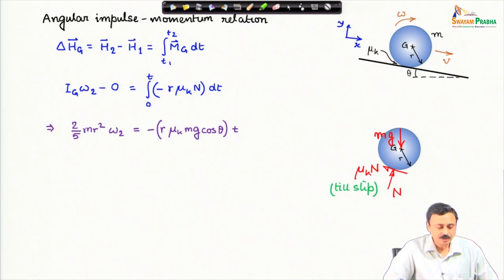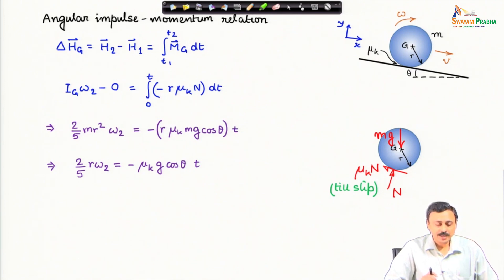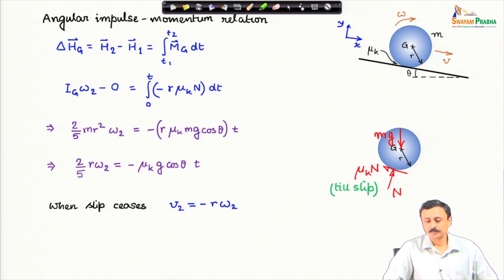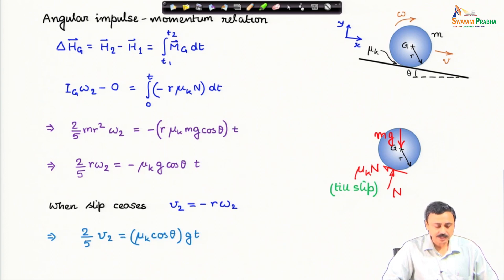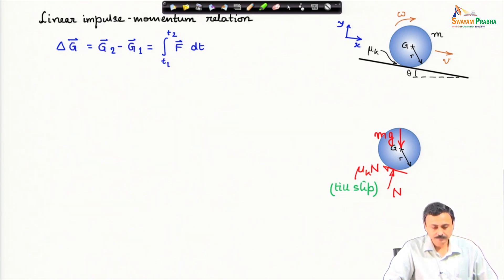The moment of inertia about G is 2/5 m r-squared times omega_2, and the right hand side is straightforward to integrate because everything is constant. By simplifying this expression I arrive at a relation from the angular impulse momentum relation. At the end of slipping the sphere starts rolling. The rolling condition is that the velocity of the center of mass must equal minus r times omega_2. Substituting this gives v_2 — the velocity of the center of mass at the end of slipping — related to the time of slipping.